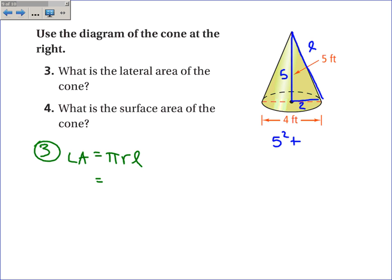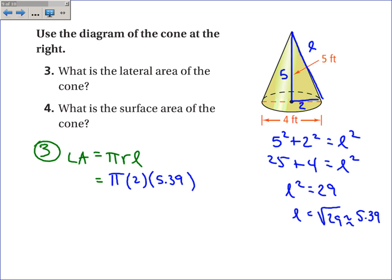Let's see here. 5 squared plus 2 squared is equal to L squared. 25 plus 4 is equal to L squared. L squared is equal to 29. And L is equal to the square root of 29, which is about 5.39. So go back over here and pi of the radius is 2. The slant height is 5.39. So I'll just give an answer of 33.84 feet squared.